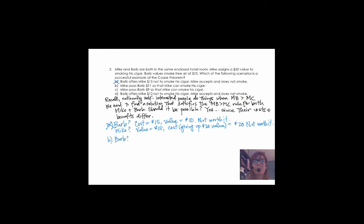What about B? Well, for B, the cost to Barb is the $10 in value of clean air that she gives up, but Mike is going to compensate her $11. So the value or the benefit is greater than the cost. It's worth it to Barb. And for Mike, the cost is $11, but he gets to smoke which is worth $20. So that's worth it.